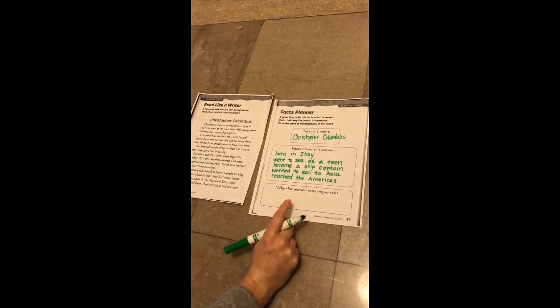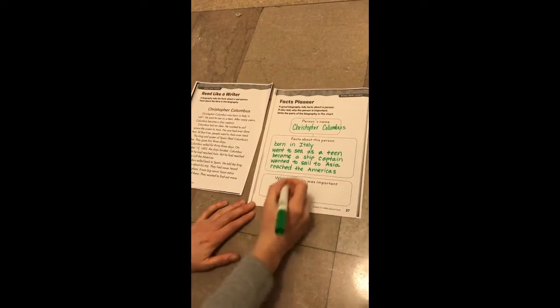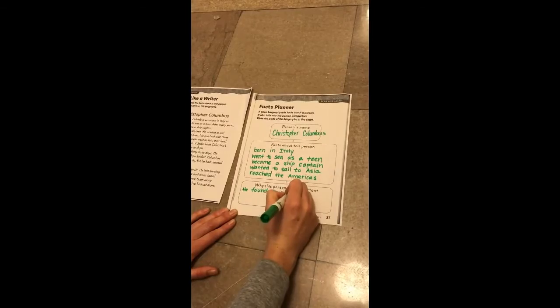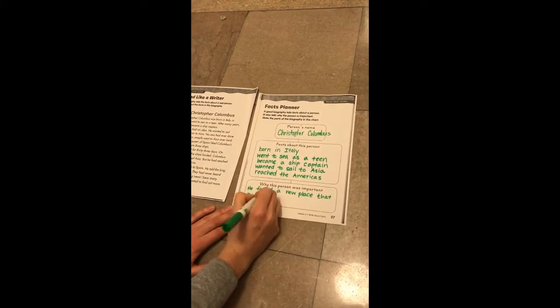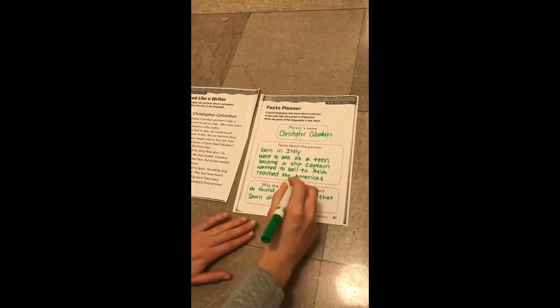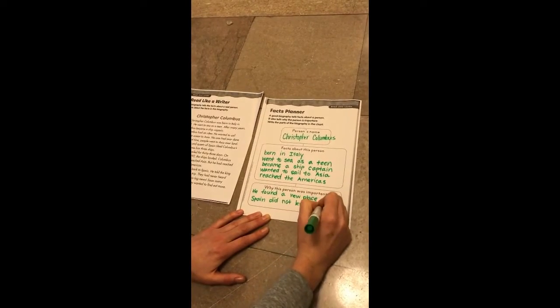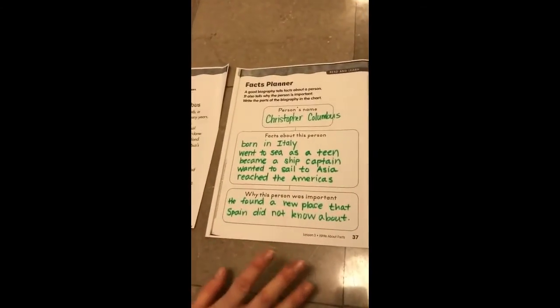Next it asks: why was this person important? Thinking about everything in this story, the most important thing was that he found a new place that the people in Spain did not know about. So I'll write: he found a new place that Spain did not know about. Because after he found that place, a lot of people began wanting to sail there. This facts planner gives us the main ideas and the most important things from our story, and it organizes that information in a new way.